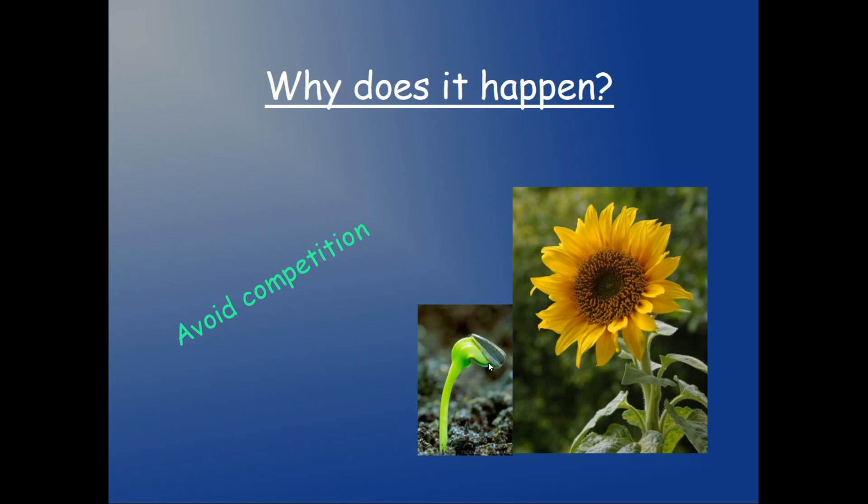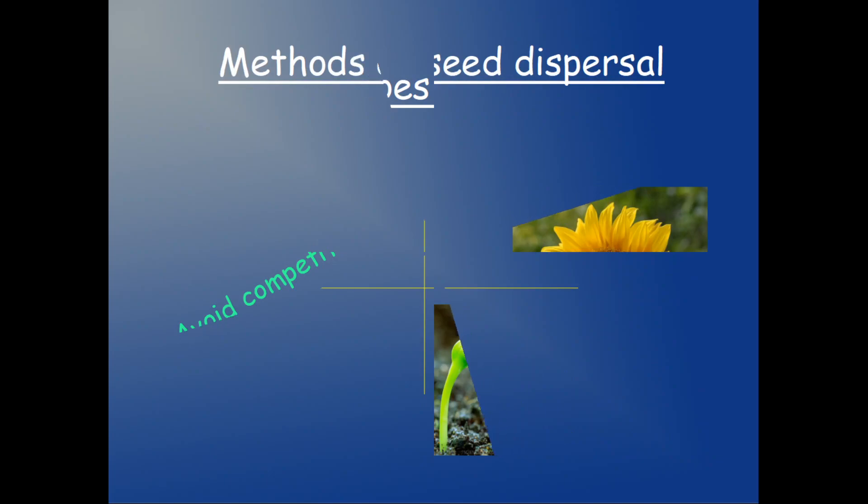Plants have developed strategies in order to send their seeds far away. We can talk about four methods. It's easy to know they are four because we have four squares here. First method.